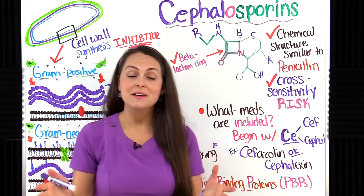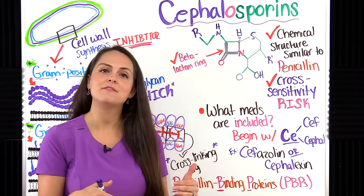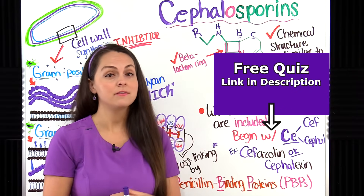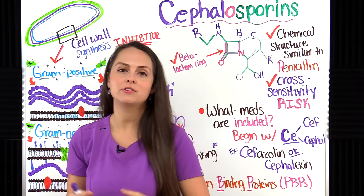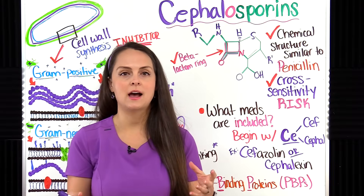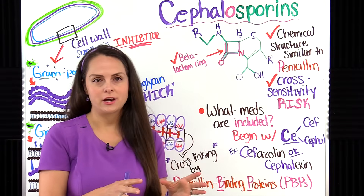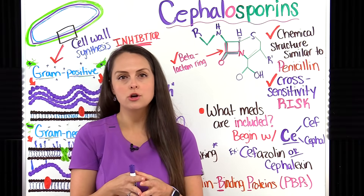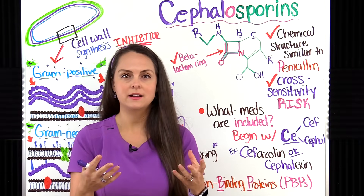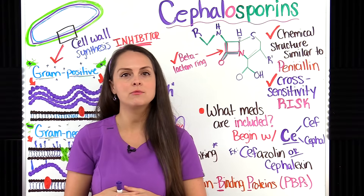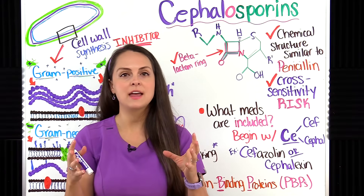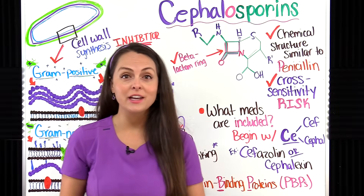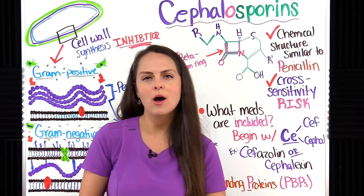One thing you want to remember about cephalosporins is that they can be divided into generations. So far there are five generations of cephalosporins, and depending on the generation, they will target different types of bacteria. The older generations have a narrow reach — they don't target as much bacteria — compared to the newer generations, which have a broad reach and tackle some serious bacterial infections.